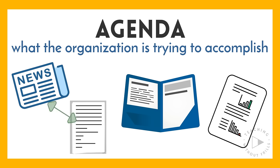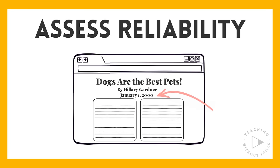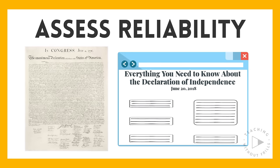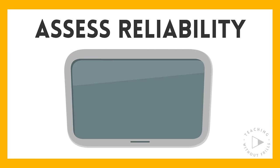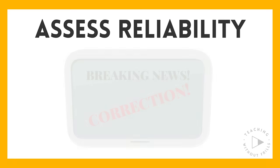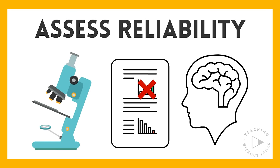Look for common information between sources and references that provide evidence to verify an author's claims. In some cases, it's helpful to consider the date of publication of a source. An original document created at the time of a historical event may be more accurate than a secondary source written years later. Information about current events can change quickly, so sometimes more recent sources have the most up-to-date and accurate information. Scientific understandings can change over time too, so it's important to be aware of any recent findings that may contradict previous conclusions.